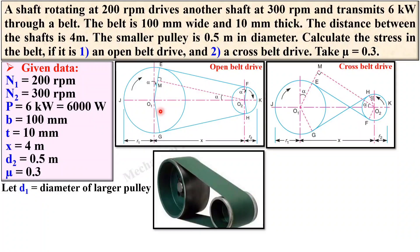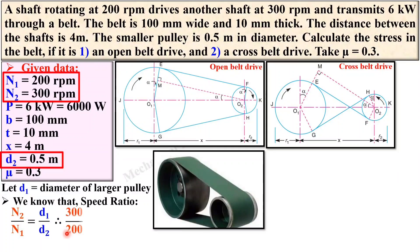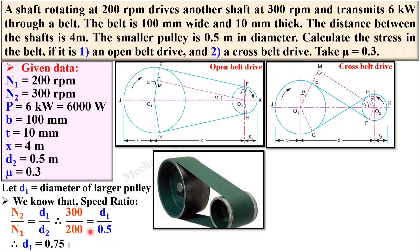D1 is the diameter of the larger pulley. The speed ratio for belt drive is N2/N1 = D1/D2, without considering slip and creep. We have N1, N2, and D2, so putting in the values we can find D1 = 0.75 meter.